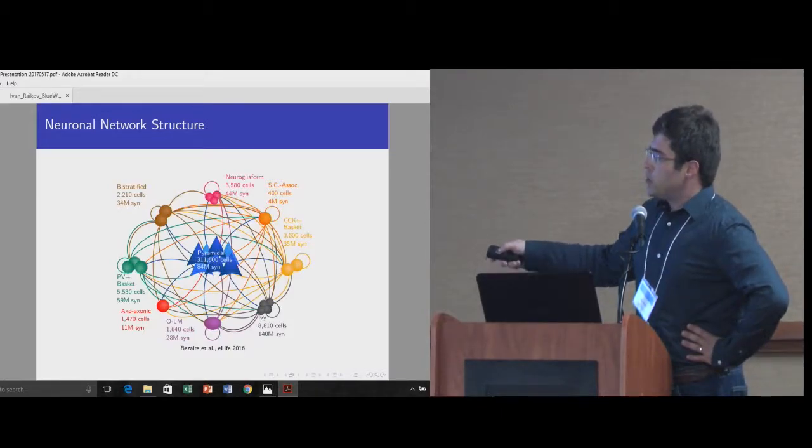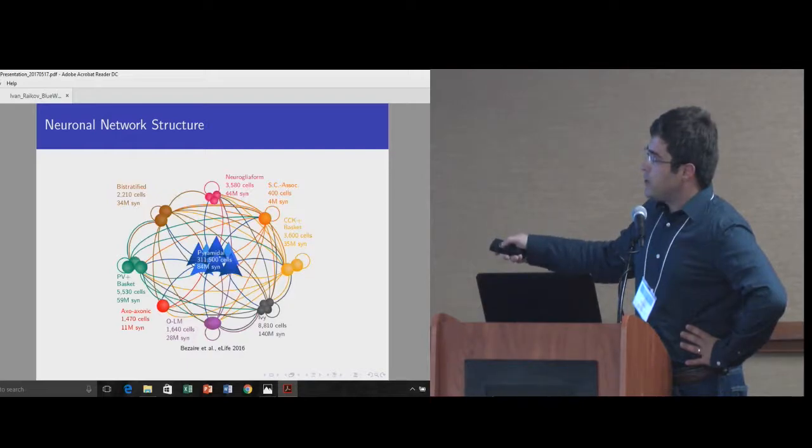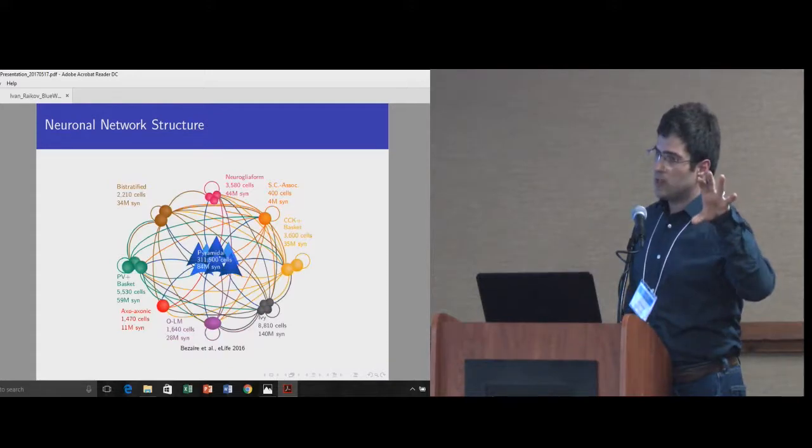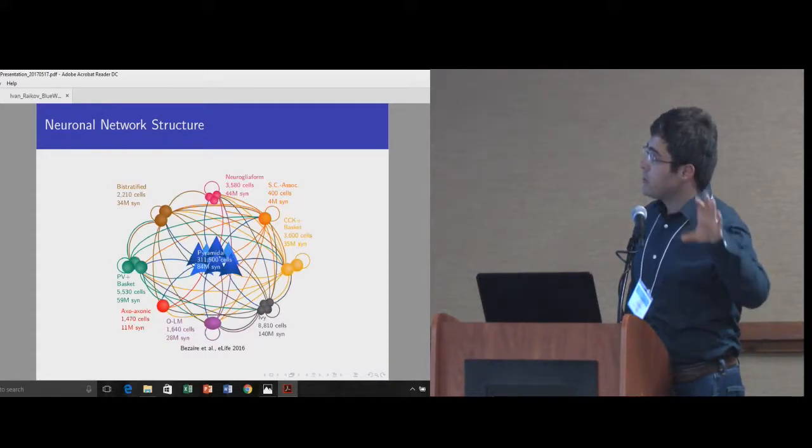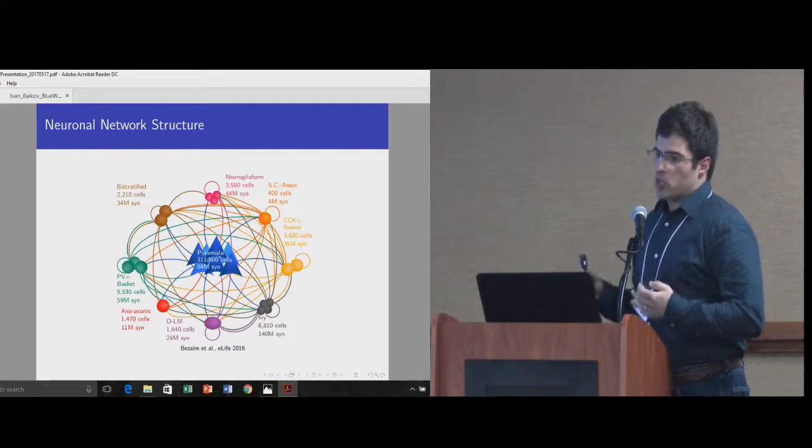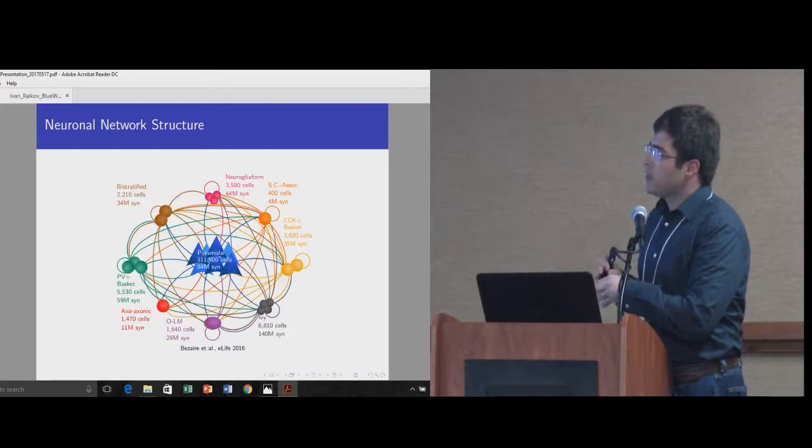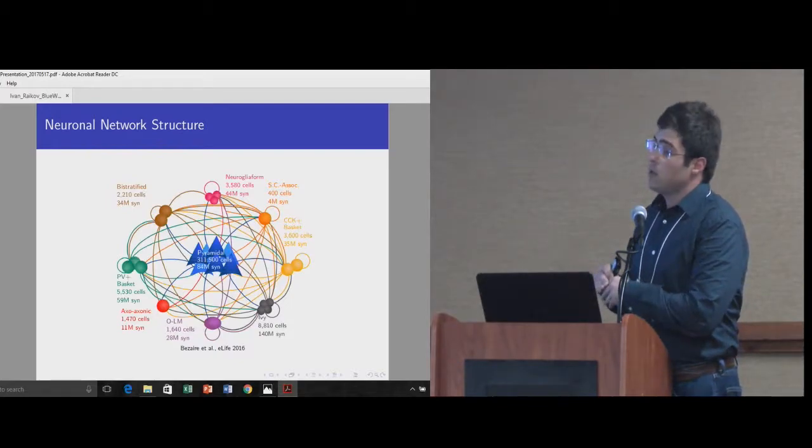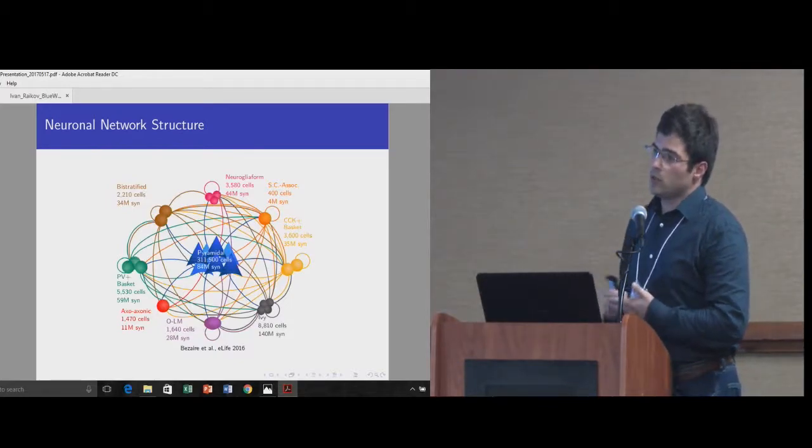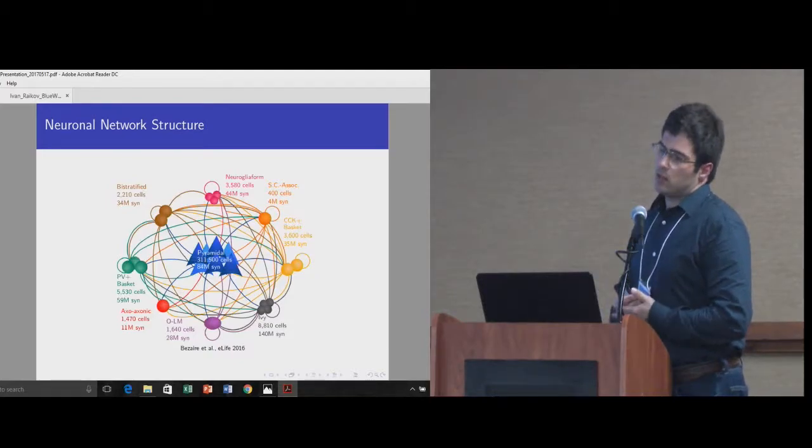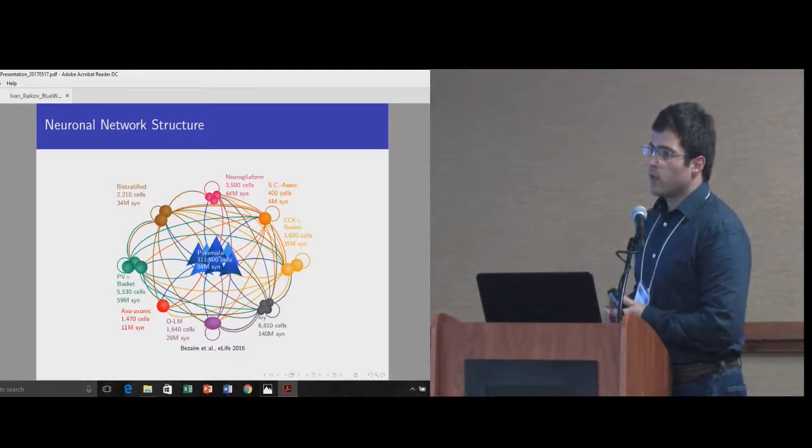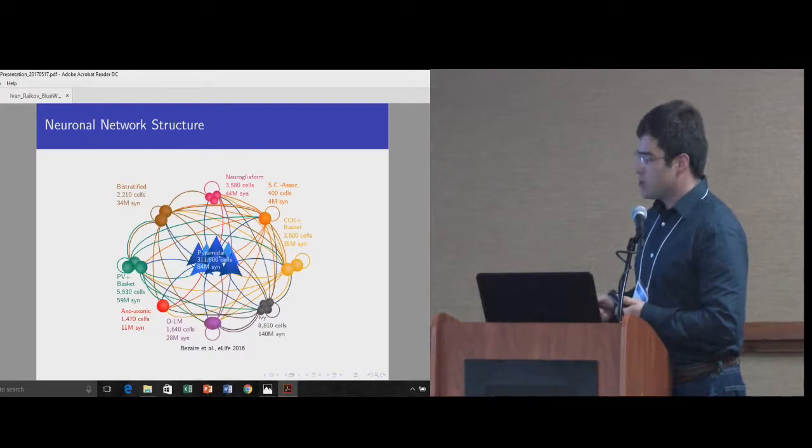There are specific rules of connectivity. Some neurons prefer to contact only neurons of specific types or at specific locations. But generally speaking, the connectivity is primarily local. So adjacent neurons prefer to contact each other with a few long distance connections. So this generally can be considered a small world network for those who are interested in graph theory.